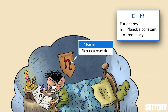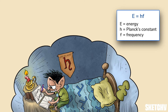Planck's constant provides the proportionality between energy and frequency. In SI units, it's equal to about 6.6 x 10 to the negative 34th. In equations, Planck's constant is denoted by a lowercase h, which you can remember by Herbert's monogrammed h-pennant. So ultimately, the energy of a photon is just equal to Planck's constant times its frequency: h times f.